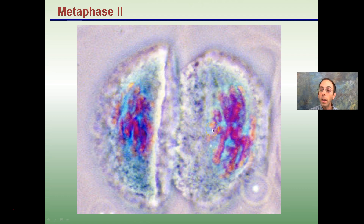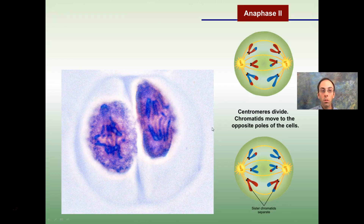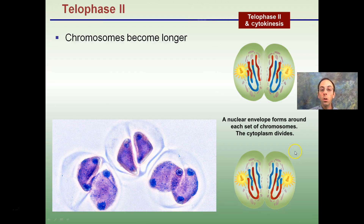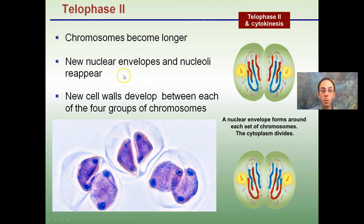Everything lines up on the equator region in metaphase II. In anaphase II, chromatids separate, allowing chromosomes to migrate to the poles. Importantly, in anaphase II the centromeres are actually broken as chromosomes migrate to the poles. In telophase II and cytokinesis, chromosomes become longer, new nuclear envelopes develop, nucleoli appear, and new cell walls develop between each of the four groups of chromosomes.